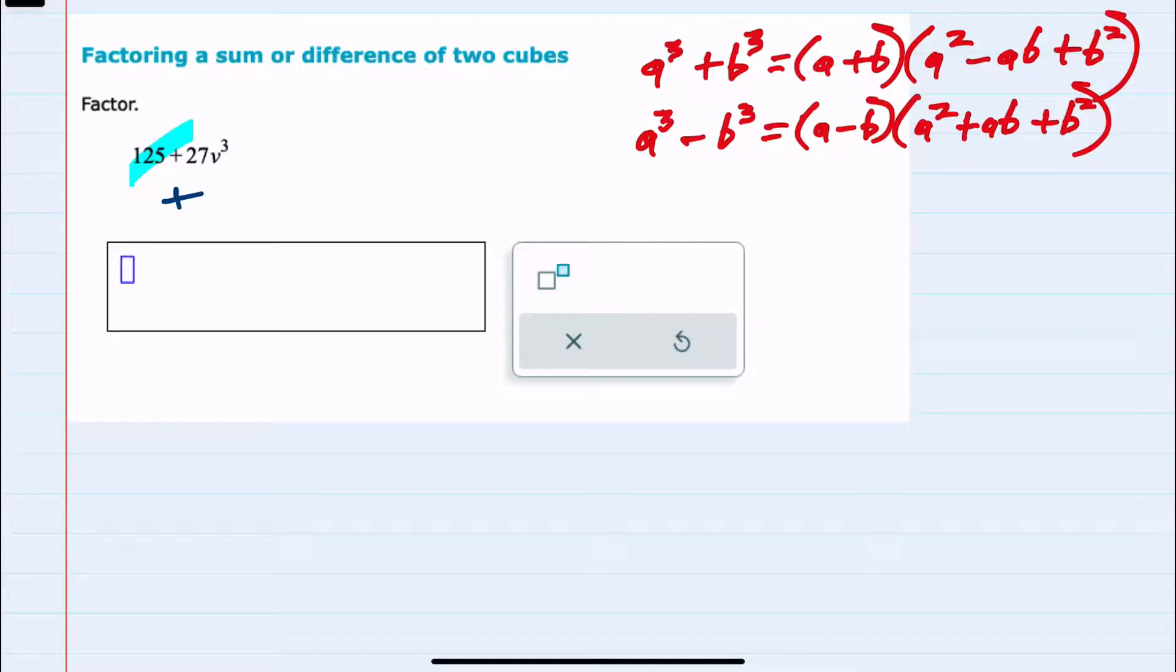So the first part here, the 125, can I write that as something cubed? And yes, 125 is 5 cubed. And then the second part, can I write that as something cubed? The 27 is 3 cubed, and the v to the third would just have a v inside being cubed. And from here, I can see that my a is 5, and my b is 3v.